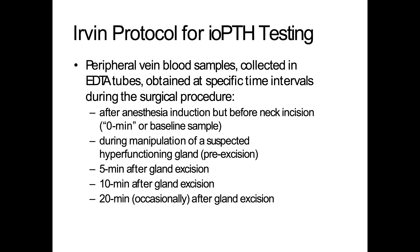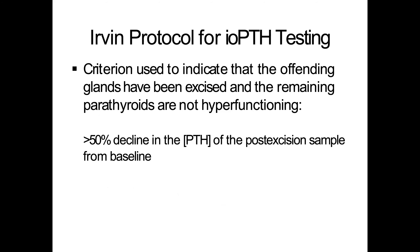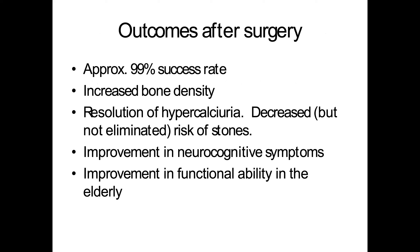From our standpoint, we put in an arterial line and use that to obtain blood samples, which are hand-carried to the lab. After induction but before starting the procedure, you get a baseline sample. As they manipulate things, you'll get a second sample, then after they remove the first gland — usually five to ten minutes — a sample there, and possibly a repeat sample. The criteria is about a 50% decrease in parathyroid hormone post-excision from baseline. If they remove one gland and don't have that significant decrease, they'll move on to the next most suspicious gland. Outcomes after surgery have about a 99% success rate — resulting in increased bone density, resolution of hypercalciuria, decreased risk of stones, and significant improvement in neurocognitive symptoms and functional ability for the elderly.